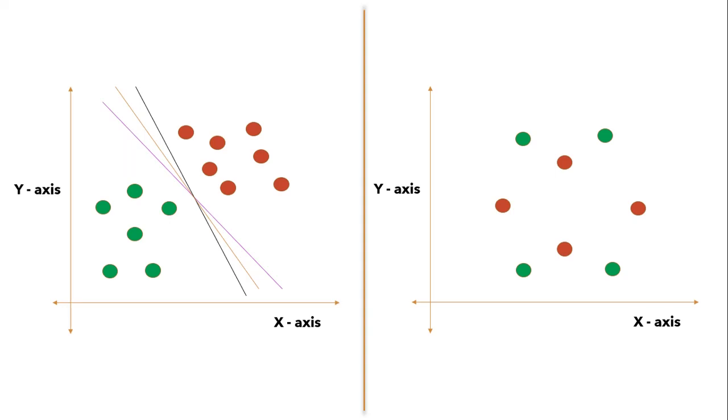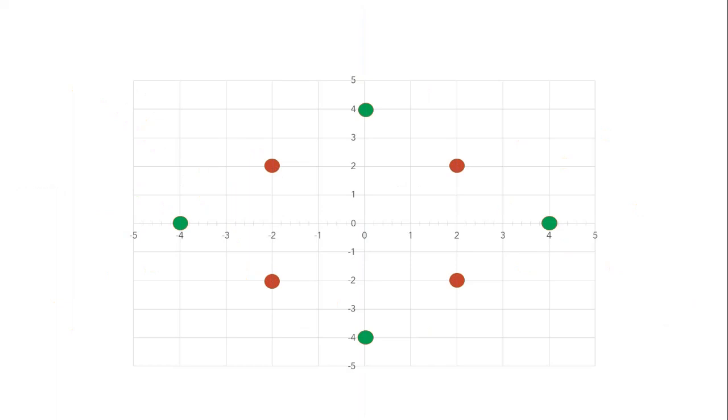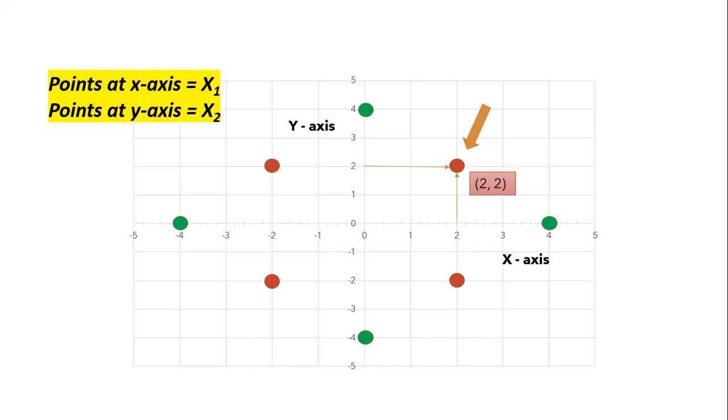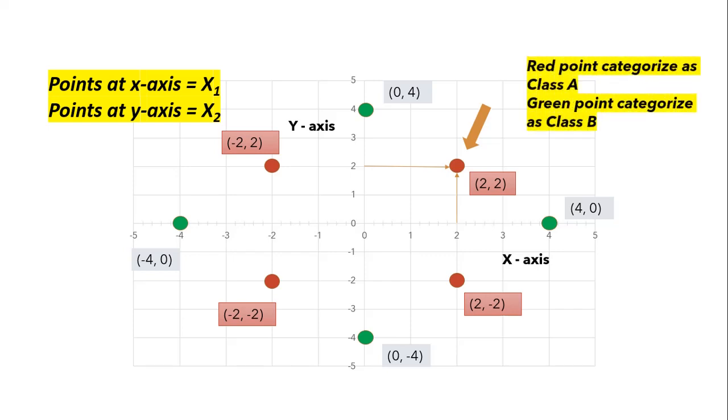Let's quickly start. Here we are considering X-axis as X1 feature and Y-axis as X2 feature. Let's calculate vector points for all these data points. If I talk about this point, then vector point will be 2 at X-axis (that is X1 feature) and 2 at Y-axis (that is X2 feature). We can map each point as shown on the screen. Let's consider red points as Class A vector and green points as Class B vector.